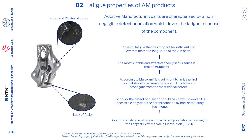The most suitable theory in this sense is that of Murakami. His model can predict the maximum first principal stress which can let nucleate and propagate a crack from the most critical defect. If that first principal stress threshold is not exceeded, then the part can be considered safe, even in presence of defects. With the aim of evaluating this limit, the defect population must be known. However, it can be accessed only after part production, with for example non-destructive techniques, when the design phase is already concluded. In order to access this defect population during the design phase, it has to be estimated statistically a priori. Murakami demonstrated that the defect population follows the Largest Extreme Value Distribution, LEVD.